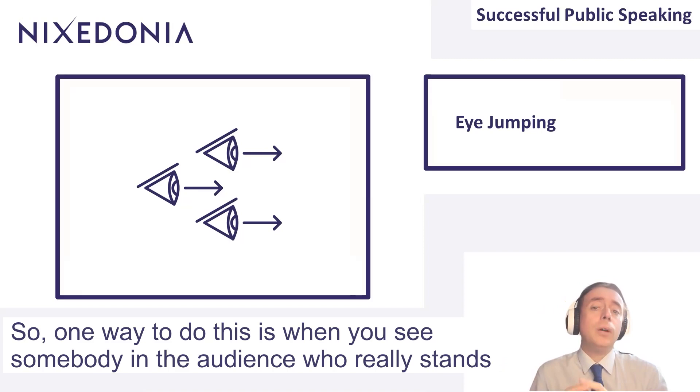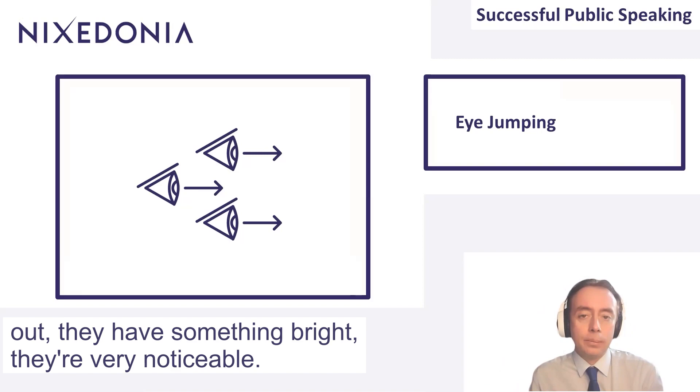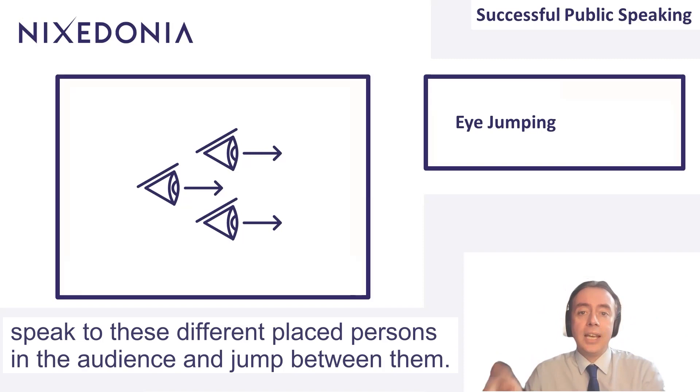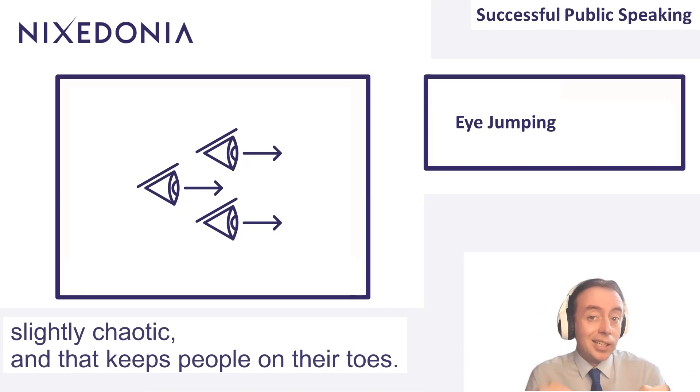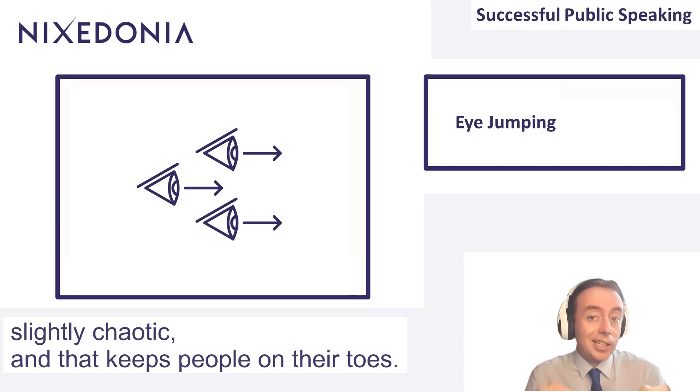One way to do this is to look for somebody in the audience who really stands out—they have something bright or are very noticeable. Strategically speak to these different placed persons in the audience and jump between them, not in one particular order, slightly chaotic. That keeps people on their toes. That's the idea of eye jumping. You can maybe give it a try sometime. Thank you very much.